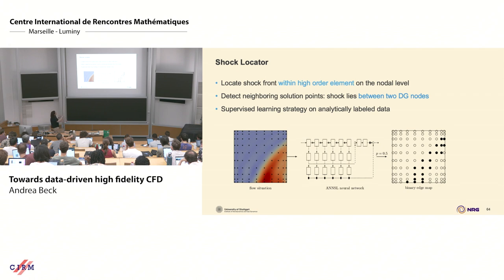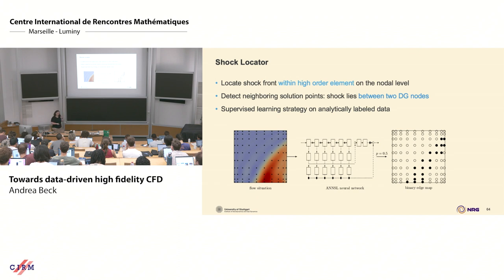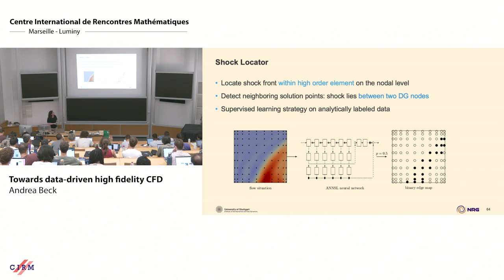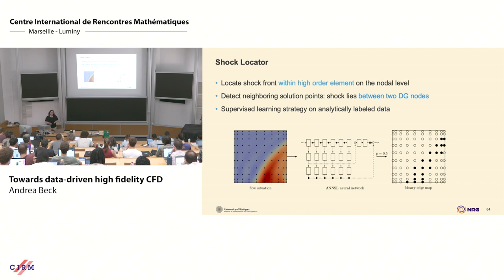What we're trying to do is input a solution — directly input our tensor product structure data points, not an image. We know from our training data where the shock front is; we can locate it to the closest interpolation node and train our neural network to do that. Essentially, I'd like my network to predict a binary edge map, detecting the edge bounded by interpolation points. This would be very beneficial because we could target our shock capturing precisely to where the shock is located.